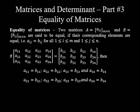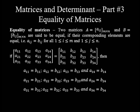Following the same logic, row 3 elements are equalized as: A sub 3 1 equals B sub 3 1, A sub 3 2 equals B sub 3 2, A sub 3 3 equals B sub 3 3, and A sub 3 4 equals B sub 3 4. Knowing this fact will help us solve different problems concerning equality of matrices.